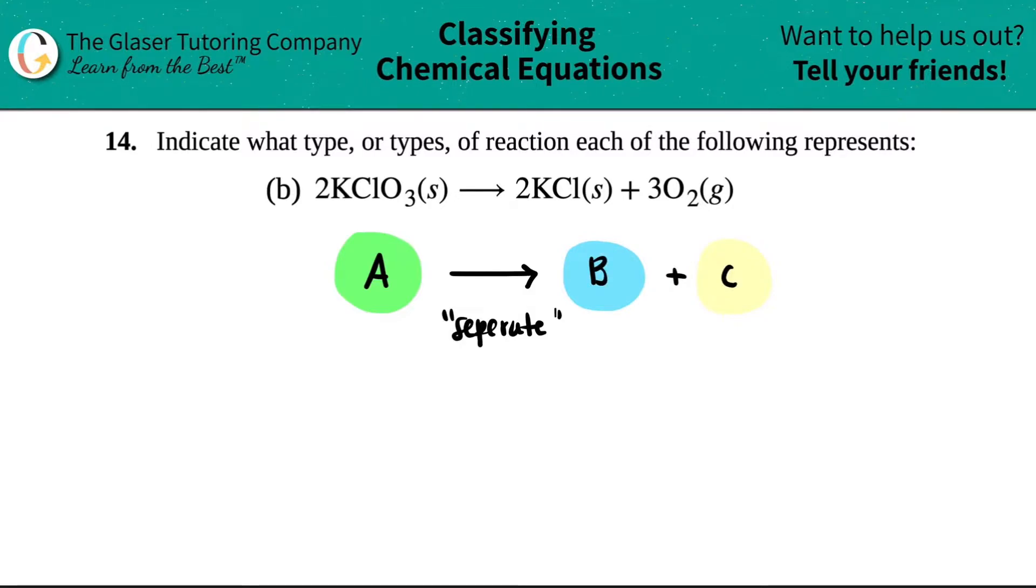But the idea here is that you had a single compound which broke down into smaller things. It separated. It broke down. In chemistry terms, we call this decomposing. If you literally have one compound here and you break down into its smaller pieces, you're decomposing. This is called a decomposition reaction.